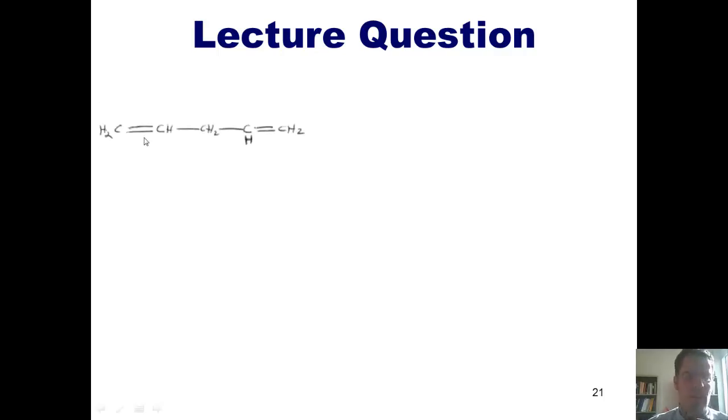Let's start with our first one. As you can see, the double bonds in this molecule are more than one carbon away. Thus, there is not a double bond, single bond, double bond, single bond pattern in this molecule. This is not a conjugated diene.